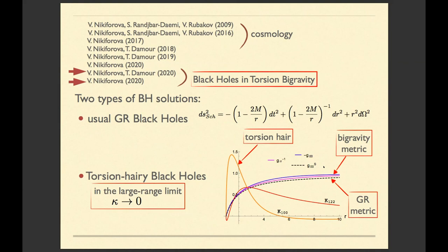And another interesting type of black holes also exists in the limit when mass of the second graviton is small. This second type of black hole has what is called torsion hair, which means that outside the black hole there exists some additional field, additional to the metric, which is torsion.